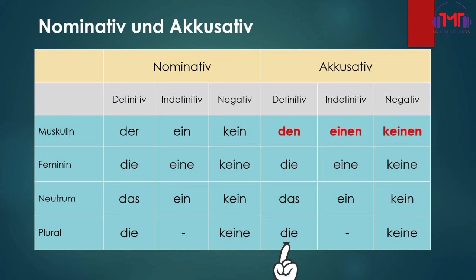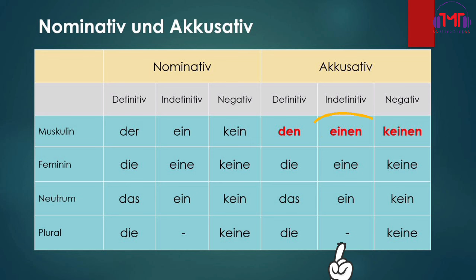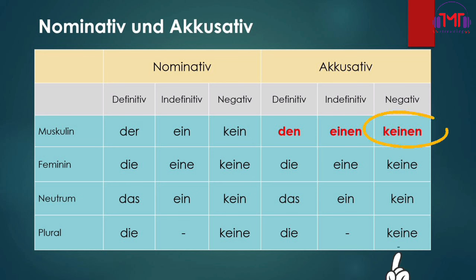The nominative: indefinite article — masculine 'ein,' feminine 'eine,' plural. Negative article — masculine 'kein,' feminine 'keine,' neuter 'kein,' plural 'kein.' Accusative: indefinite article — masculine 'einen,' feminine 'eine,' neuter 'ein.' Negative — masculine 'keinen,' feminine 'keine,' neuter 'kein,' plural 'kein.'